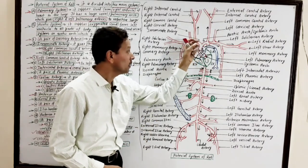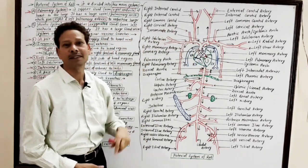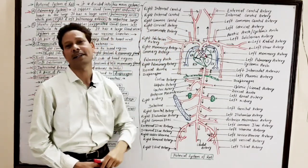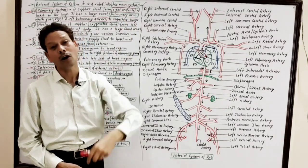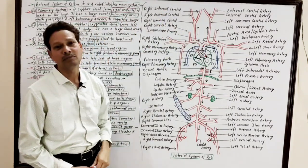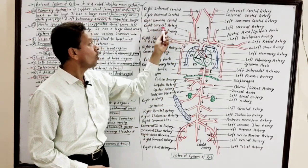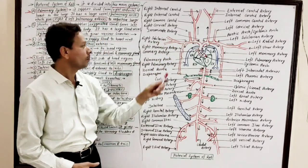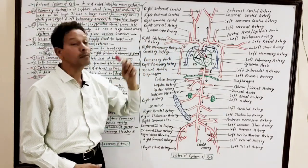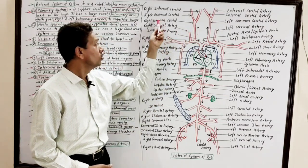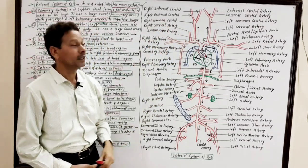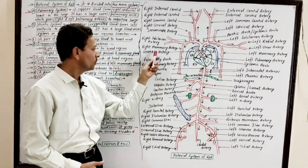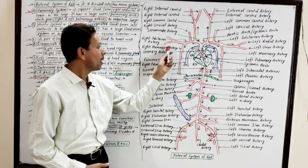The next branch on the right side is the innominate artery. This innominate artery carries oxygenated blood to the head region through the common carotid artery, to the forelimb by the subclavian artery, to the neck region through the cervical artery, and to the right side of the mammary glands through the mammary artery.